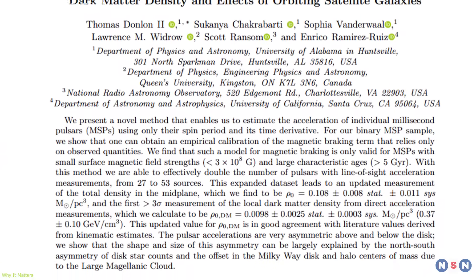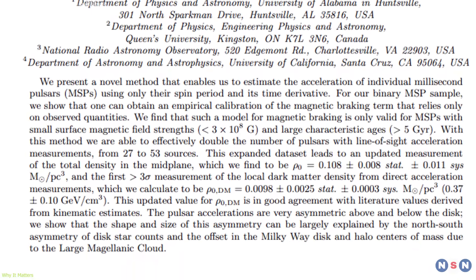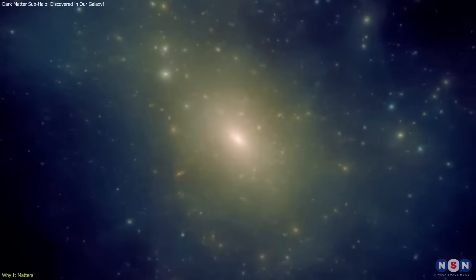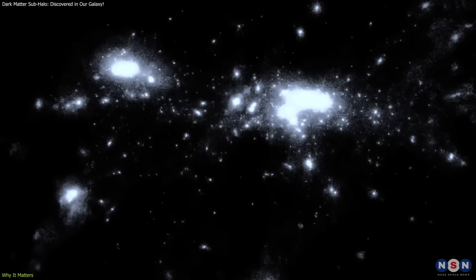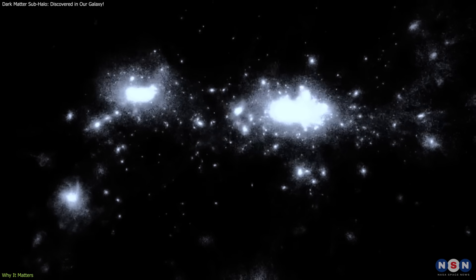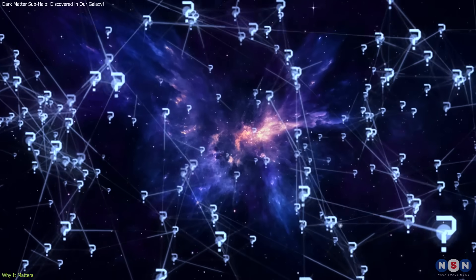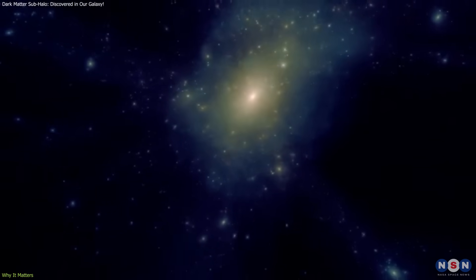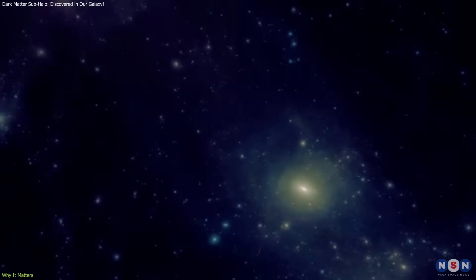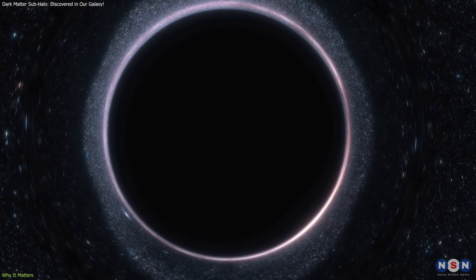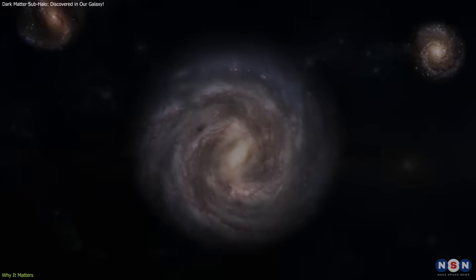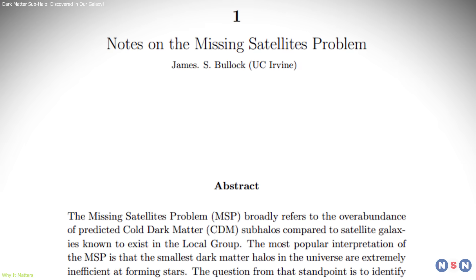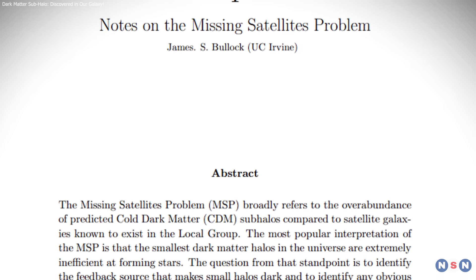The discovery also matches what simulations predict about this size. A mass of tens of millions of suns is well within the expected range—large enough to be measurable, but too diffuse in normal matter to light up telescopes. Beyond confirming theory, this finding raises new questions. If this exists, how many others are nearby? Could some be denser, possibly containing primordial black holes or compact objects? And what role do these structures play in shaping the Milky Way's satellite galaxies—a puzzle often referred to as the missing satellites problem?